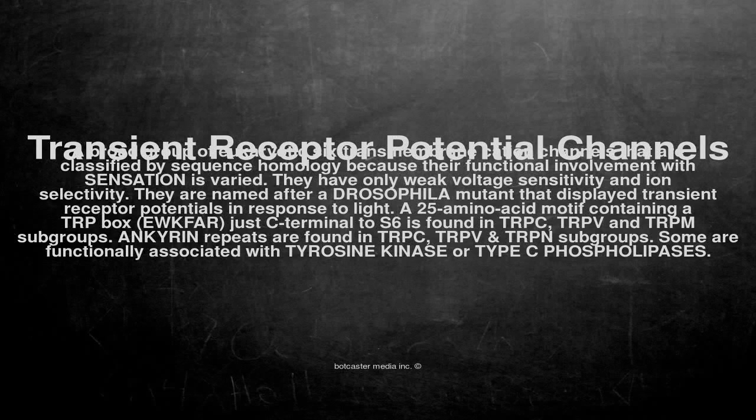Transient Receptor Potential Channels are a broad group of eukaryotic 6-transmembrane cation channels that are classified by sequence homology, because their functional involvement with sensation is varied. They have only weak voltage sensitivity and ion selectivity.